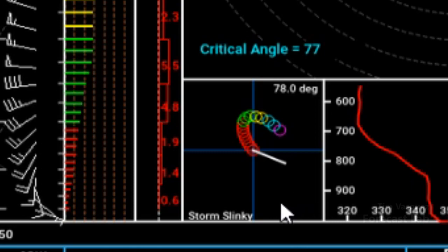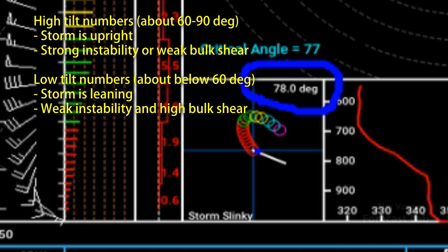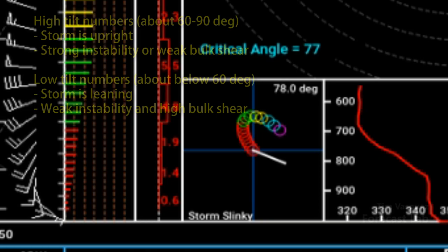A couple of other important parameters: the white line indicates the storm motion direction — the cell will be propagating toward the southeast. There's also a measure of tilt with respect to the horizon in the top right: 90 degrees is straight up, indicating the tower is standing straight up and down. Lower numbers like 45 degrees indicate a strongly sheared environment or weak instability, while high numbers close to 90 indicate low shear or strong instability.